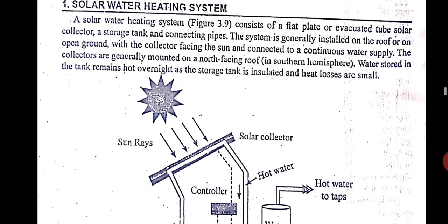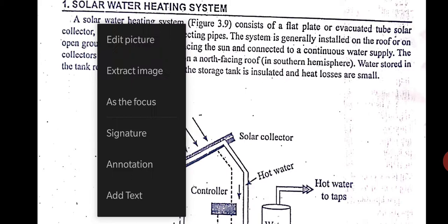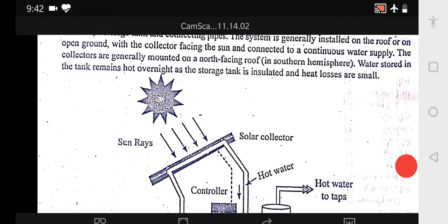They consist of a flat plate or evacuated tube solar collector, a storage tank, and connecting pipes. So basically there are two types of system: once is the earlier one, that is flat plate collector with copper tubes, and now second is the evacuated tube collector which is made of glass tubes. Then there is a storage tank, insulated storage tank which will store the hot water.